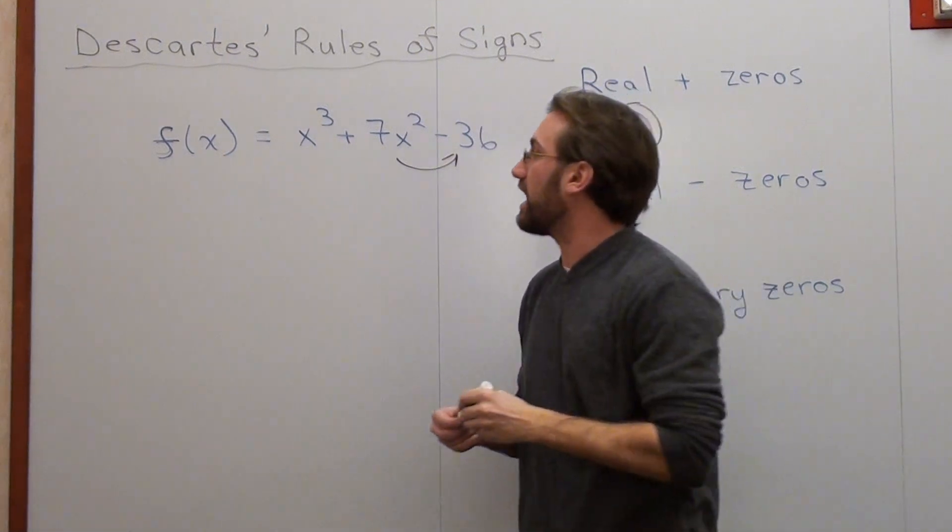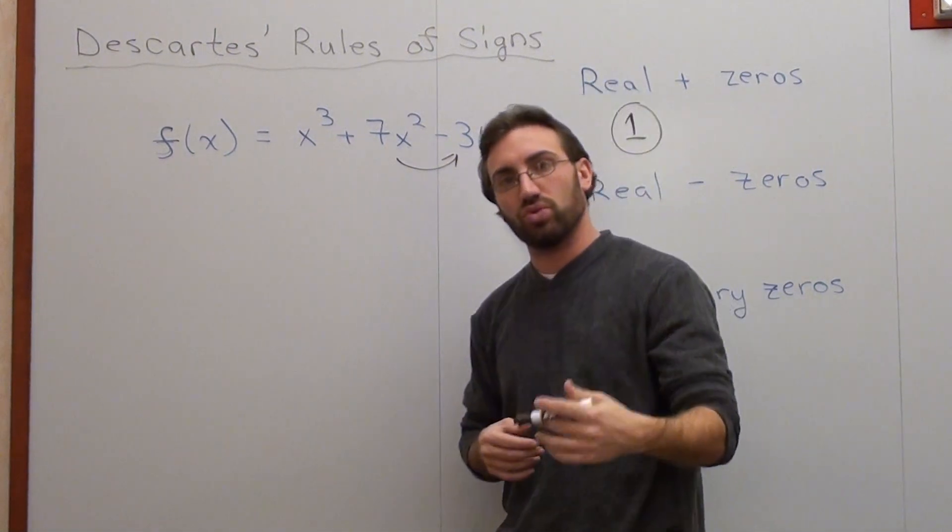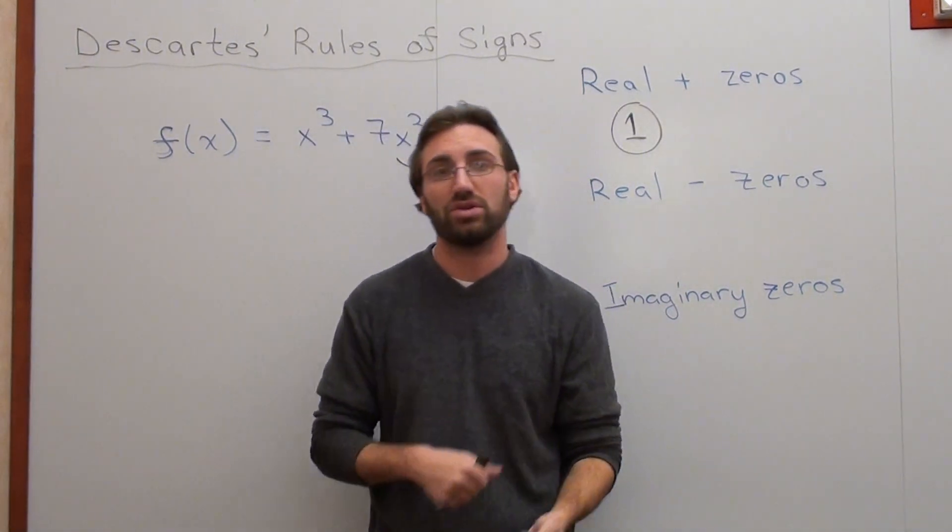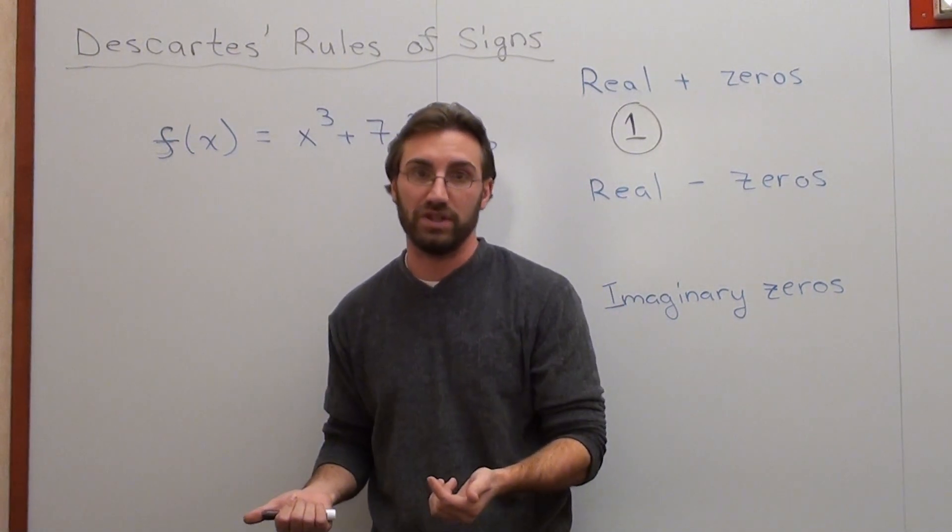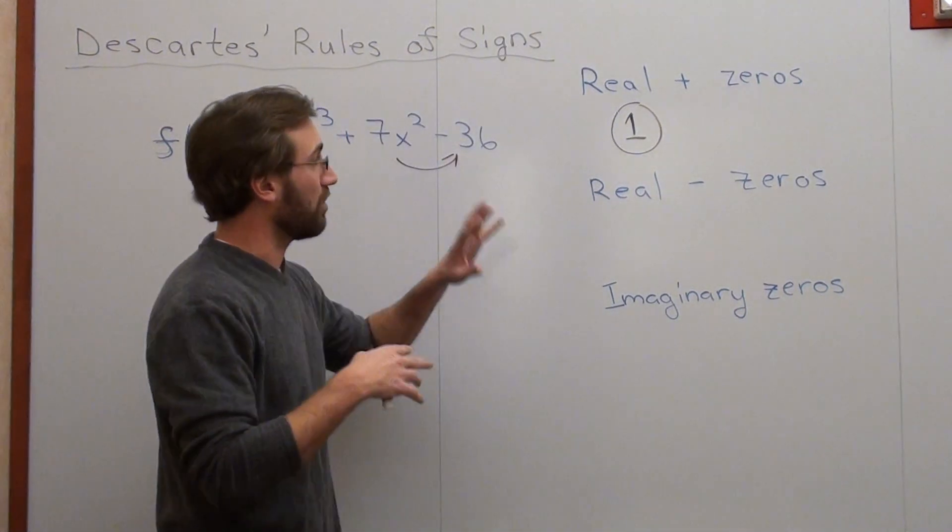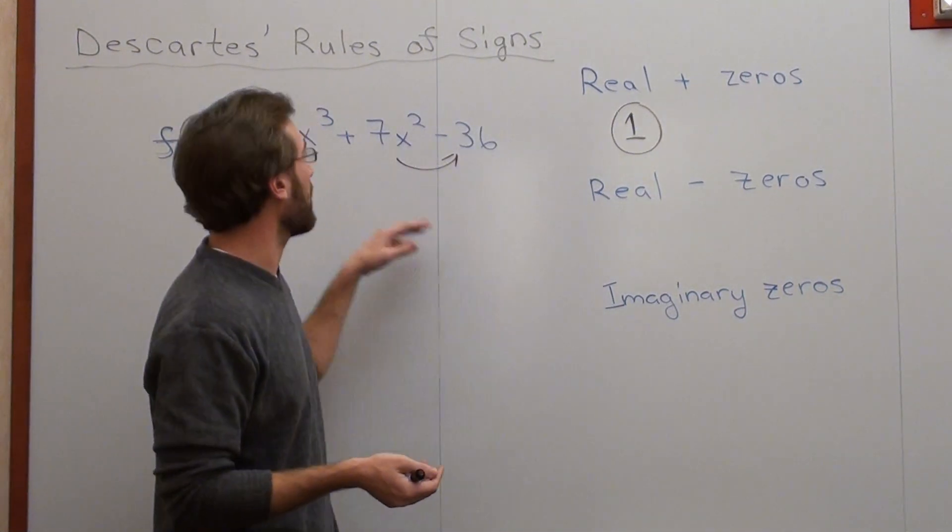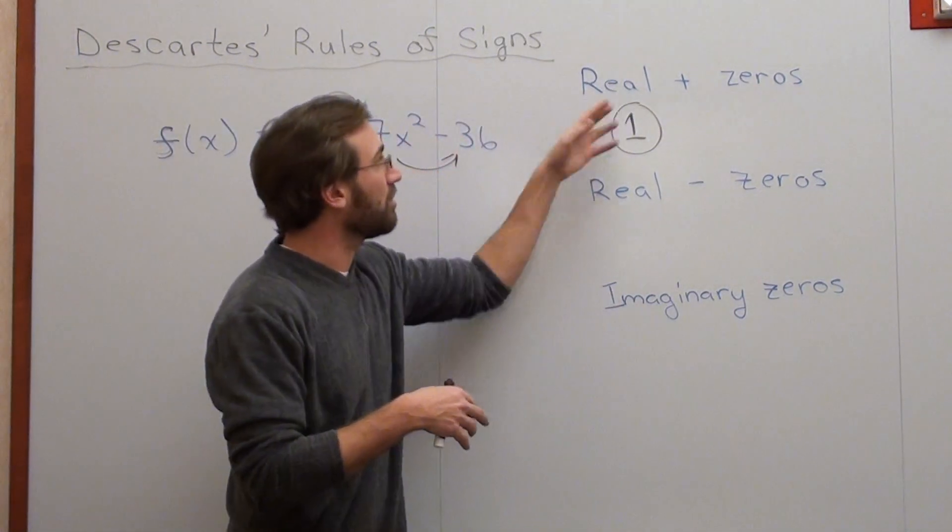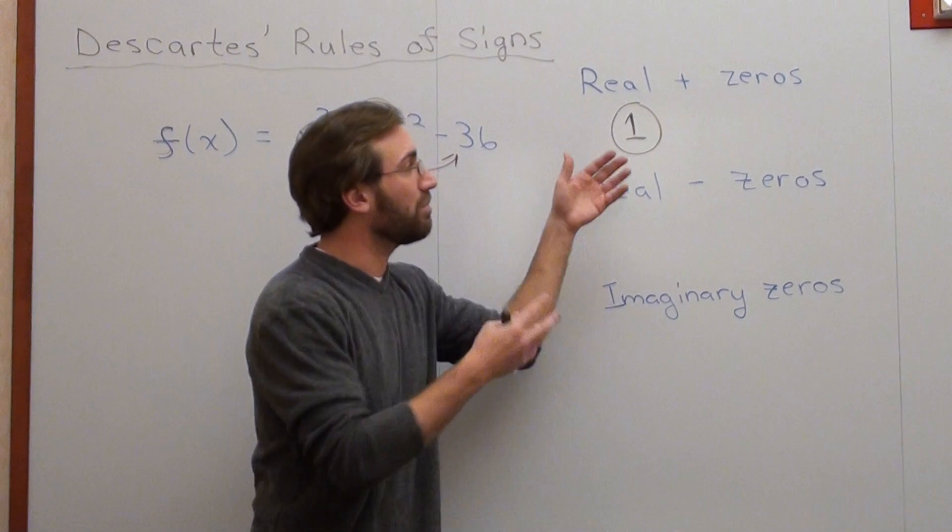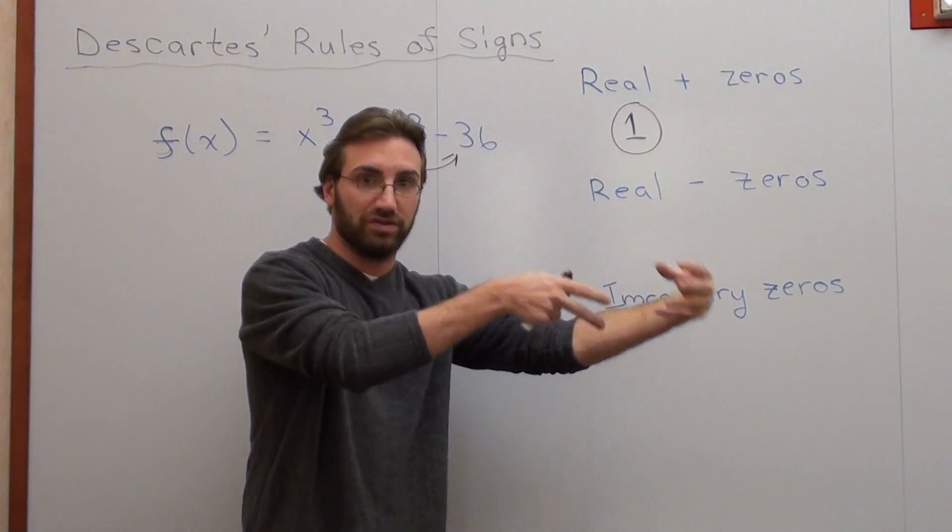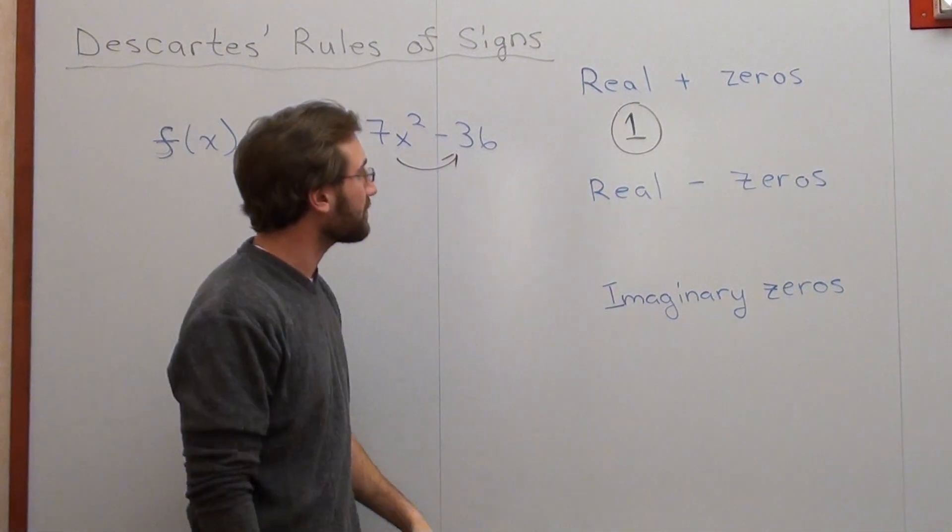Now, if there were three sign changes, it means there's three real positive zeros or one real positive zero. It goes down in multiples of two for these functions. So if I had four sign changes, it could be four real positive zeros, two real positive zeros, or zero real positive zeros. It always goes in multiples of two.